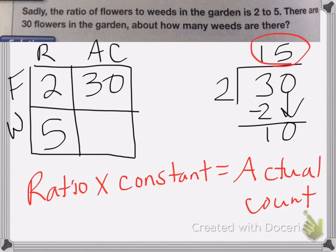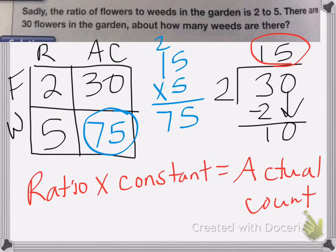We have 5 times 15. 5 times 5 is 25. Carry my 2. 5 times 1 is 5 plus 2 is 7. So my answer will be 75. 75 weeds, because you always label.